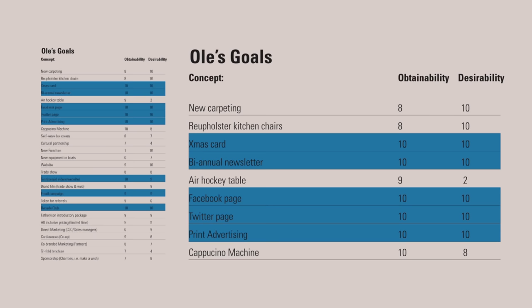All right guys, let's do it. We're gonna switch over to my machine right now and get into goals. Here are the goals — I did this early on in the stage. On the left side of the screen you can see a bunch of goals. The way we do it is we ask clients what their marketing or business goals are, then we score them on obtainability and desirability. Obtainability is how easy it is for us to do, scored 1 to 10 — something really easy scores a 10.